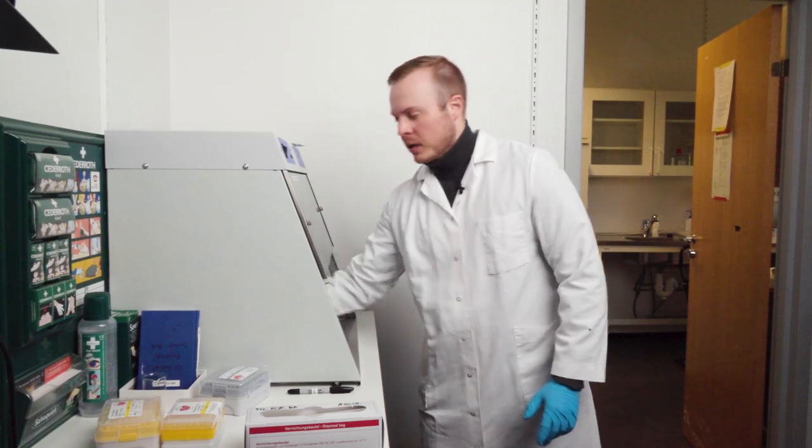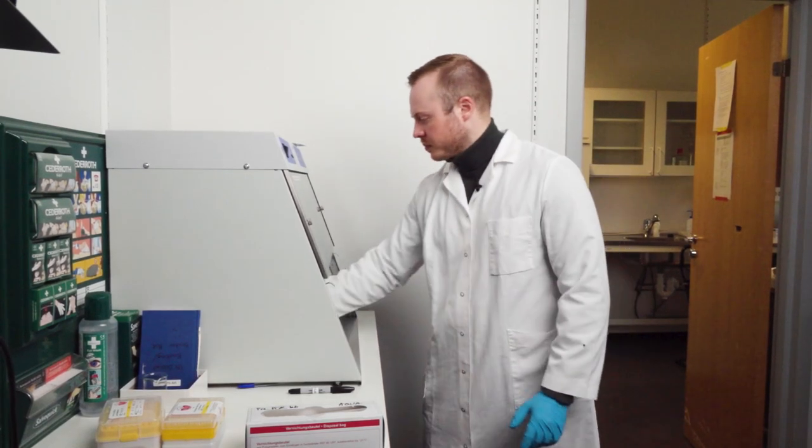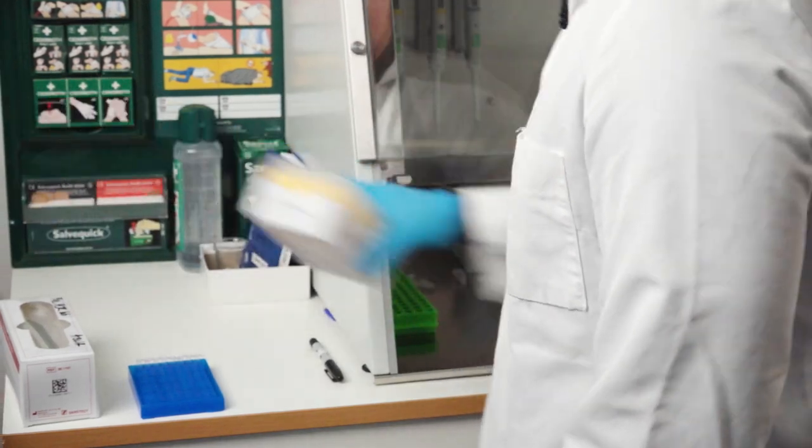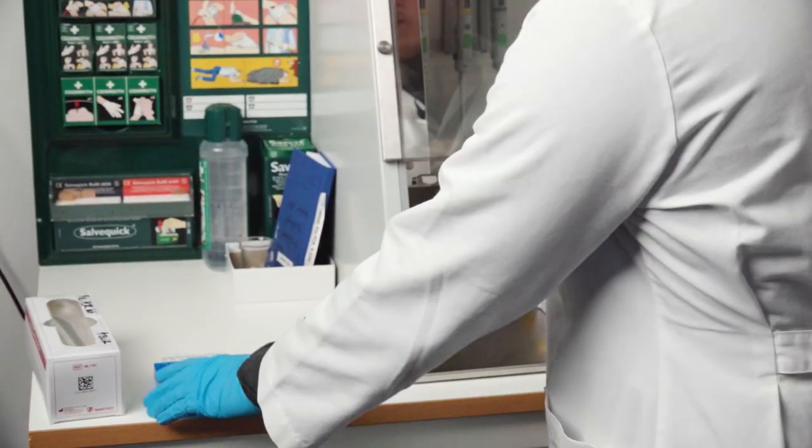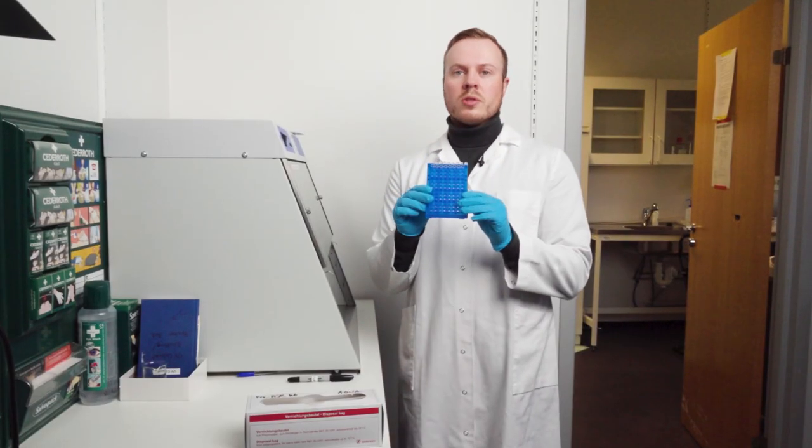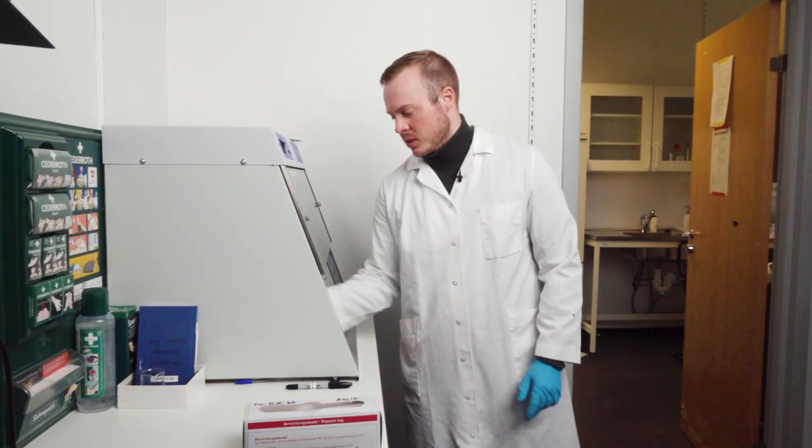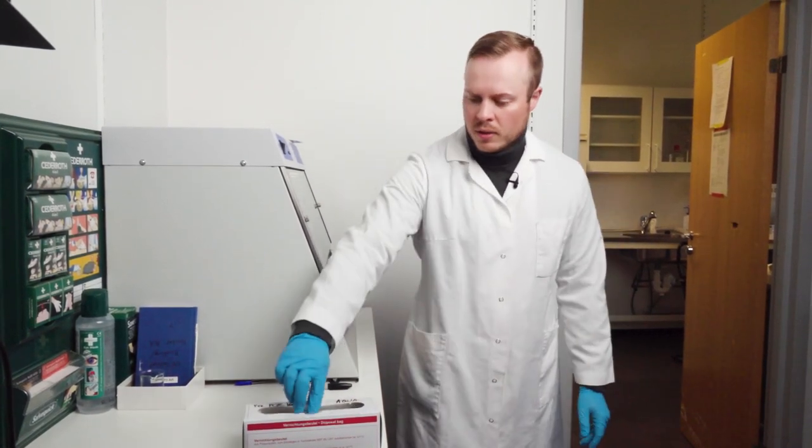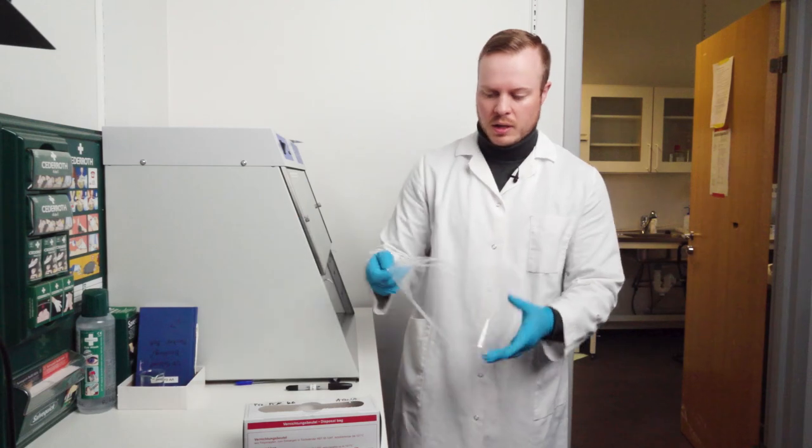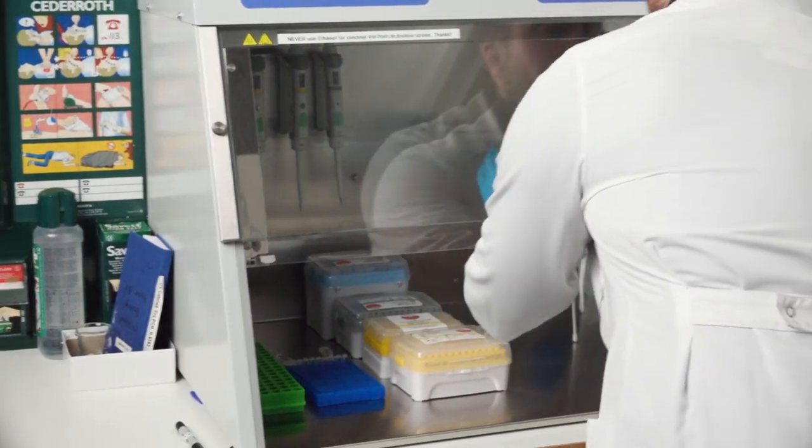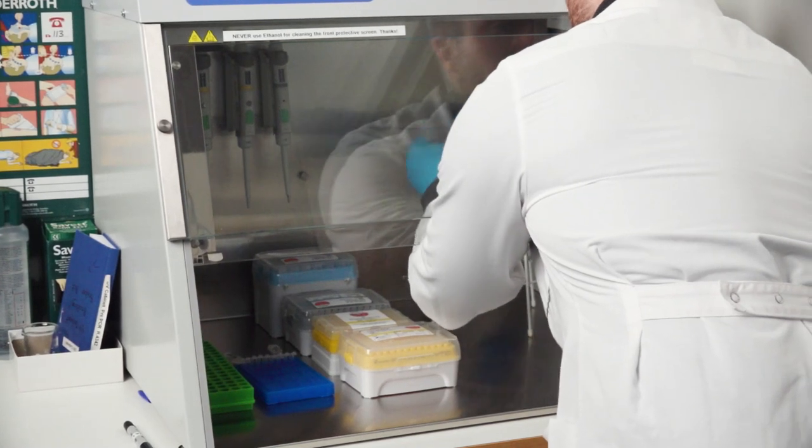Then we move in the pipette tips that we will use. Then we have the PCR tubes that we will do the reactions in. Those also need to be sterilized with UV light. And we take a plastic trash bag and prepare that as well in the UV cabinet.